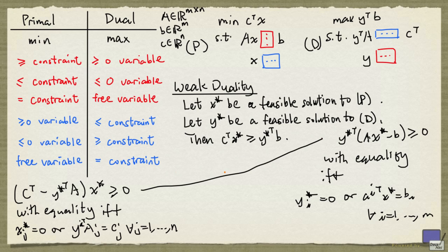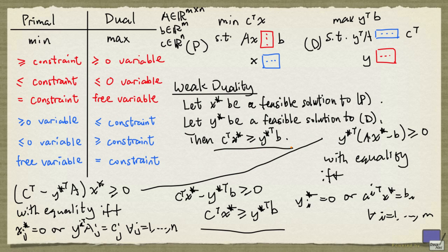Now if we add these two inequalities, we'll end up with c transpose x star minus y star transpose b greater than or equal to zero. And so we have c transpose x star greater than or equal to y star transpose b. And that's the result that we want to prove here.